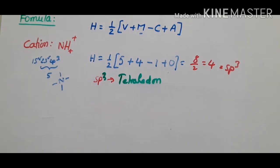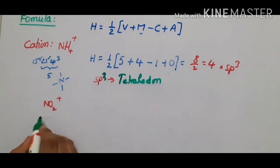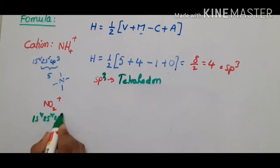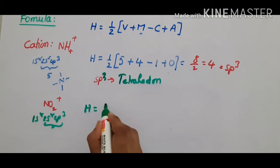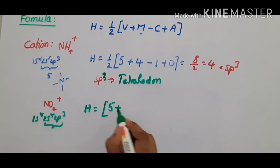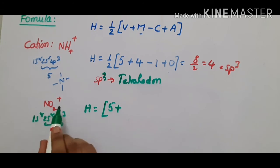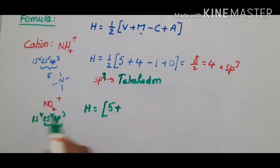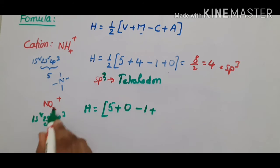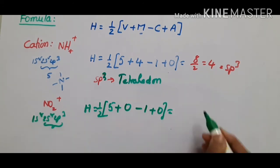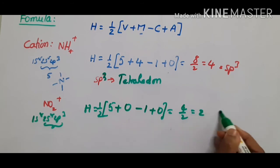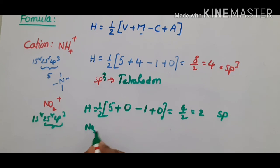Another cation example is NO₂⁺. Nitrogen again has 5 valence electrons. H = ½(5 + 0 - 1 + 0) = 4/2 = 2. There are no monovalent atoms since oxygen is divalent, and the cation charge is +1. H = 2 gives sp hybridization, so the predicted geometry of NO₂⁺ is linear.